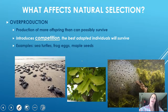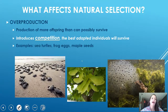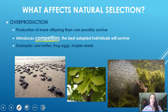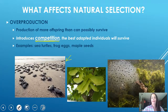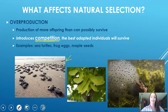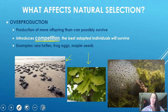What affects natural selection? The first concept is overproduction. Many species produce more offspring than will ever survive, which also introduces competition. For example, turtles hatching on a beach — the first ones to reach the water are less prone to beach predators, but there are predators in the water too. The fastest swimmers that reach safety quickest will survive, while the slow ones get picked off. You also see this in trees producing tons of seeds and in frog eggs.